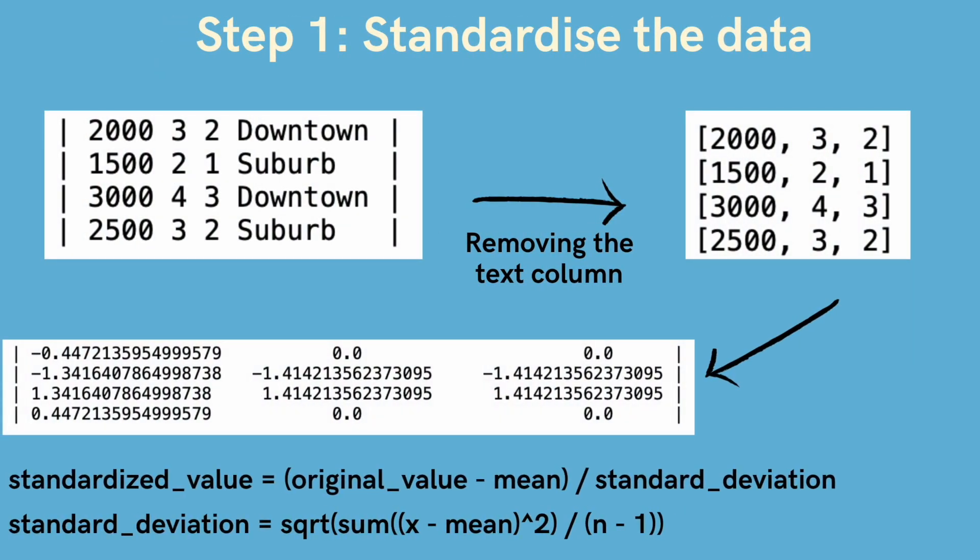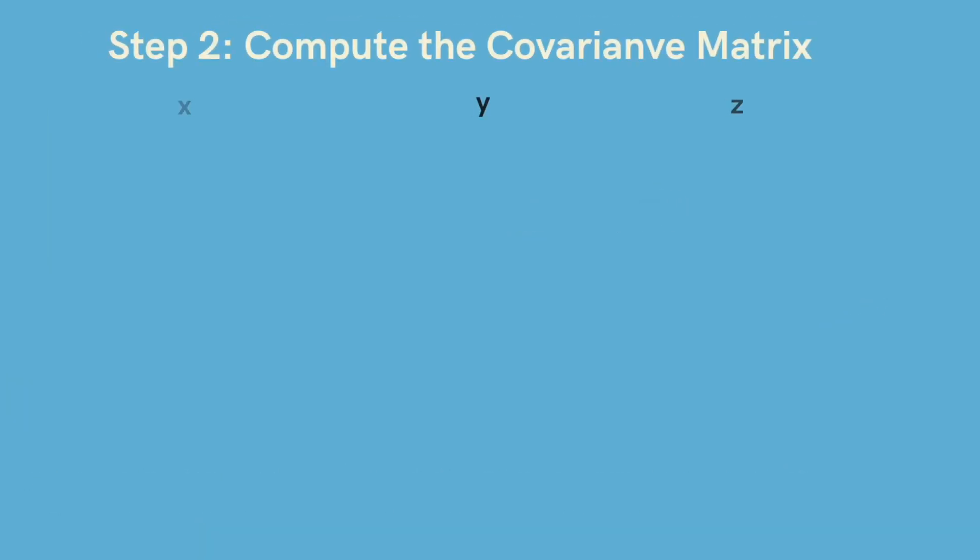So first up we'll standardize the data. We'll use this given formula, remove the text column obviously because text can't be represented in numeric form unless you label encode it. So first we'll standardize the data so it's easier to work with.